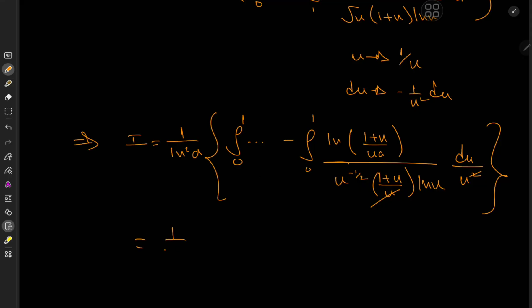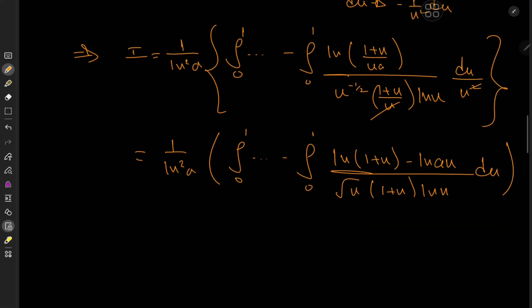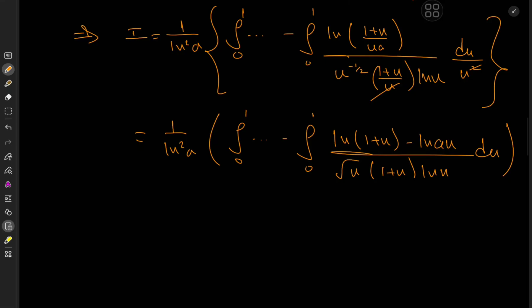And that leaves behind 1 over log squared a times the integral from 0 to 1 of a bunch of stuff again, minus the integral from 0 to 1 of log of (1 + u) minus log(a) times u over u times u to the negative one half is again root u. Again, we have (1 + u). And again, we have u. And of course, again, we have du, which I remembered to write. And by remembered, I mean, I did not neglect writing it out of rebellion.